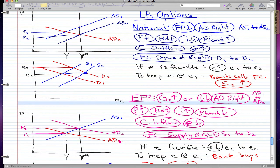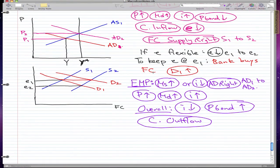If e is flexible, it goes up or depreciates. To keep e at e1, the bank will pretty much provide the market with what they need - the foreign currency. So bank sells their foreign currency, S1 will move to S2, and then we'll keep e at e1. That's expansionary monetary policy.